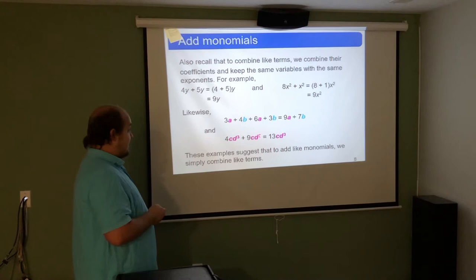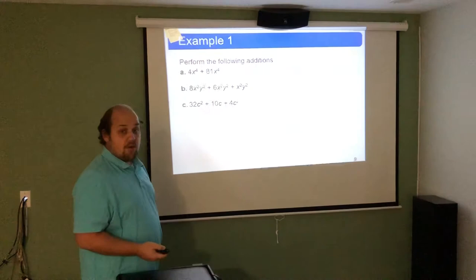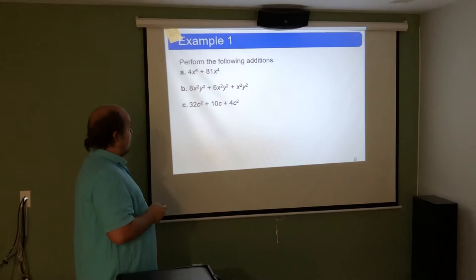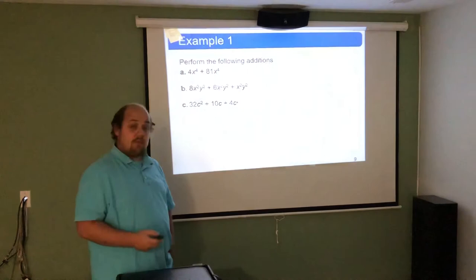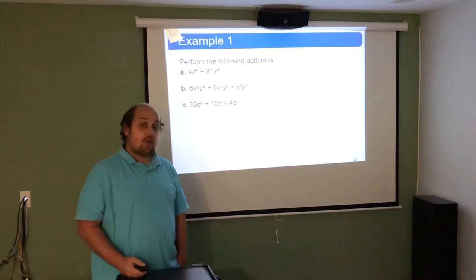Similarly, 4cb cubed plus 9cb cubed — since both have the same variables to the same powers — can be added: 4 plus 9 gives 13cb cubed. For the practice additions: the first problem has both terms with x to the fourth, so add the coefficients 4 plus 81 to get 85x to the fourth. The next problem has three terms each with x squared y squared, so 8 plus 6 plus an understood 1 gives 15x squared y squared.